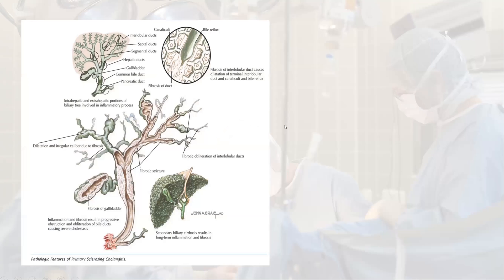Primary sclerosing cholangitis involves both extra- and intra-hepatic ducts, leading to multiple fibrotic strictures intra- and extra-hepatic. This progressive obstruction and obliteration of the bile ducts leads to severe cholestasis and secondary biliary cirrhosis.